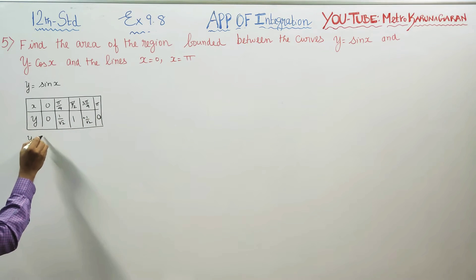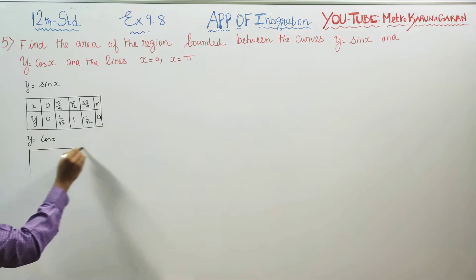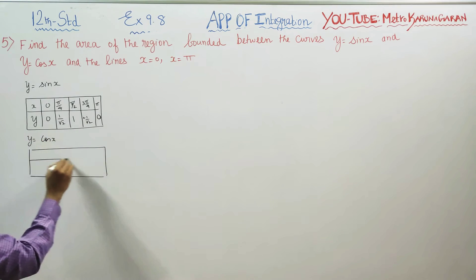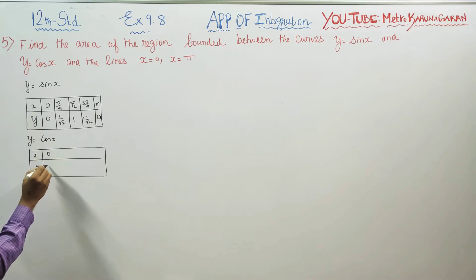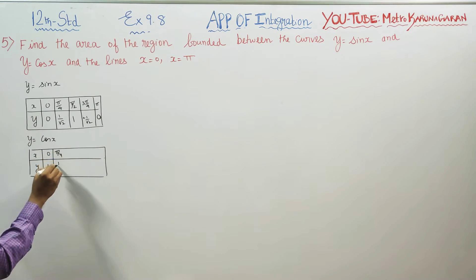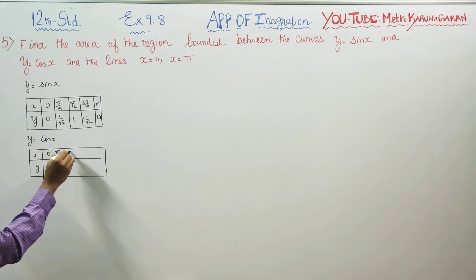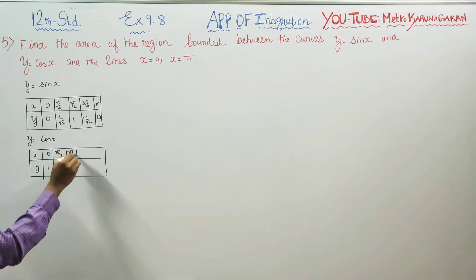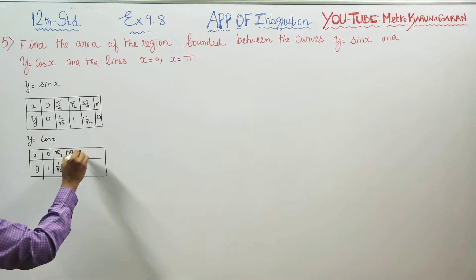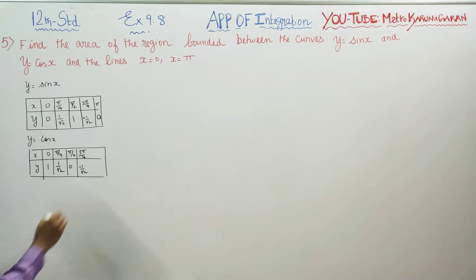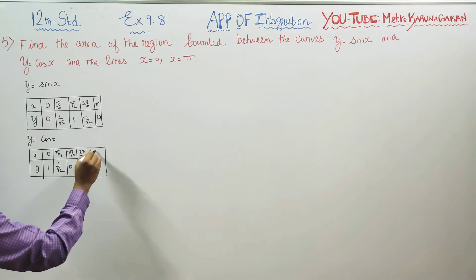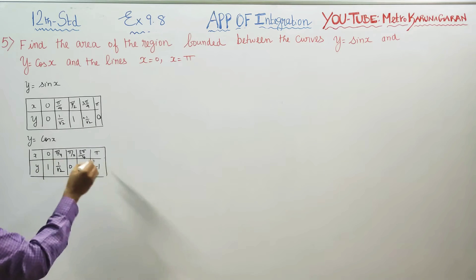Now for y = cos x. The cos x values: at x = 0, cos 0 = 1. At x = 45°, cos 45 = 1/√2. At x = 90°, cos 90 = 0. At x = 135° (2×90 − 45), the second quadrant is negative, so cos 135 = −1/√2. At x = π, cos π = −1.